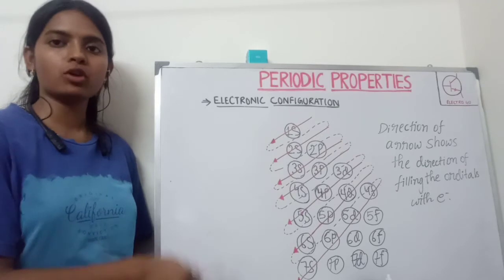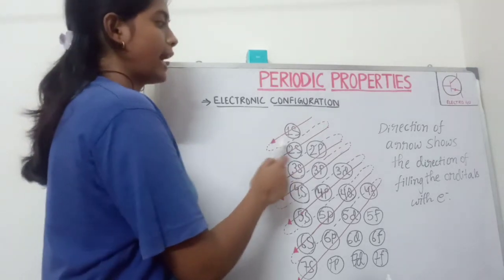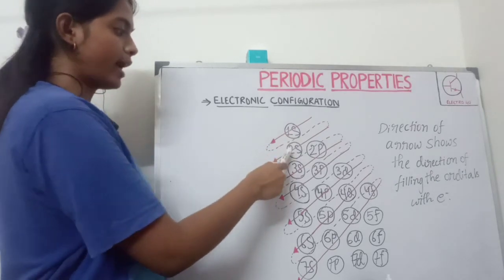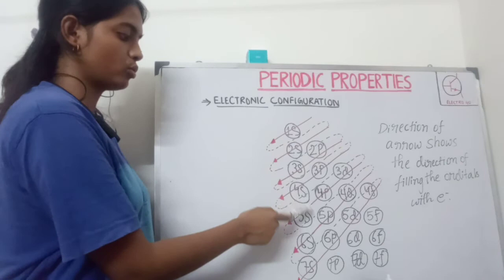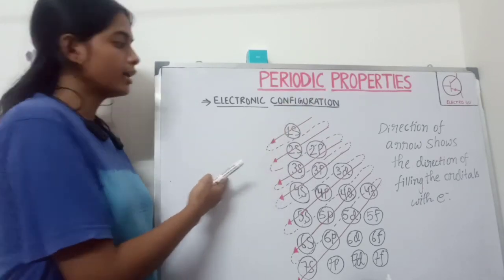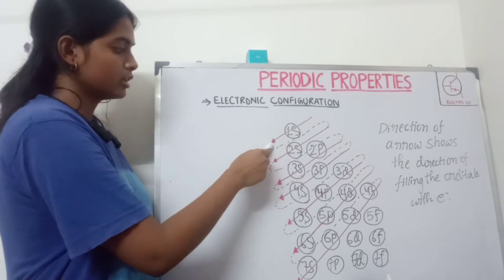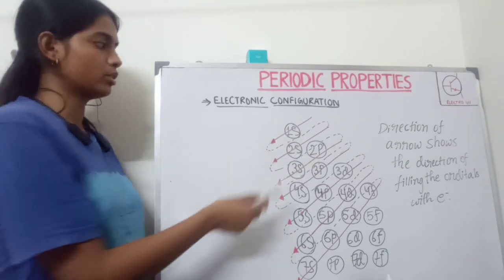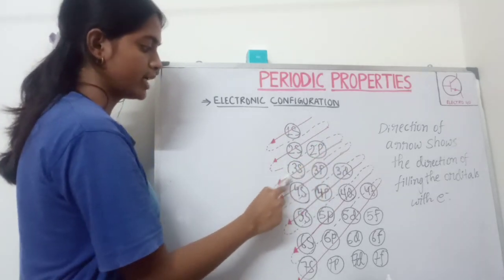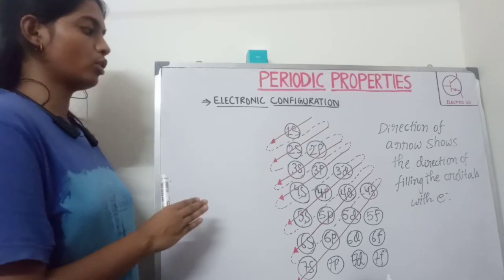This is the diagonal diagram which follows the Aufbau rule, and according to this diagram we can find the arrangement of electrons in the orbitals. The arrow denotes the direction of the electron to be filled in that orbital. Here we write the orbitals like 1s, 2s, 3s, 4s in rows, and 2p, 3p accordingly in columns, then we make diagonal arrows on these orbitals. According to the arrows, first we fill 1s, then 2s, then 2p, then 3s, then 3p, then 4s, and so on. This diagram is formed following the Aufbau rule.